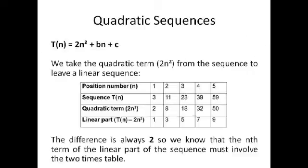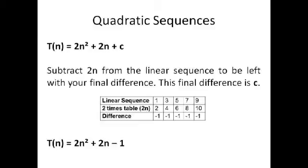To work out what b is we have to take the quadratic term from the sequence so that we're left with a linear sequence, because obviously a linear sequence is much easier to solve. So we've got our sequence which is 3, 11, 23, 39, 59. We've got our quadratic term which is 2n², so that's 2, 8, 18 and so on. And then we take that quadratic term from our sequence and we're left with a linear sequence which is 1, 3, 5, 7, 9. We can see that the difference is always 2 so we know that the nth term of the linear part must involve the 2 times table, so it must be 2n² plus 2n plus c.